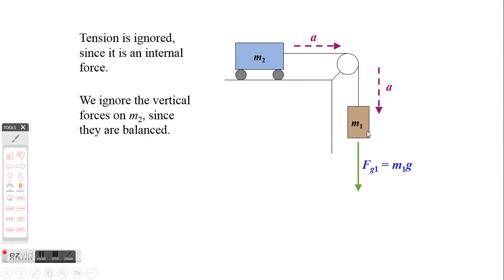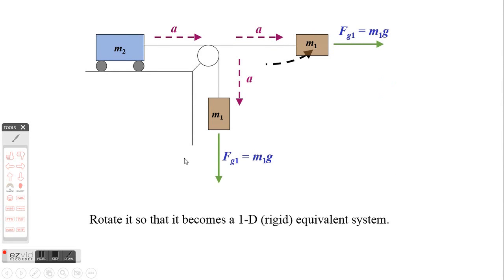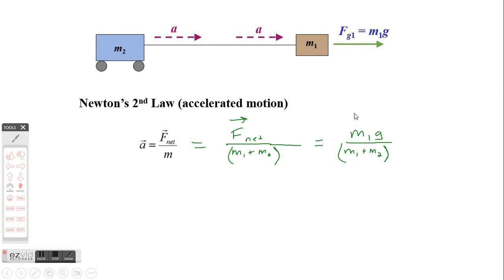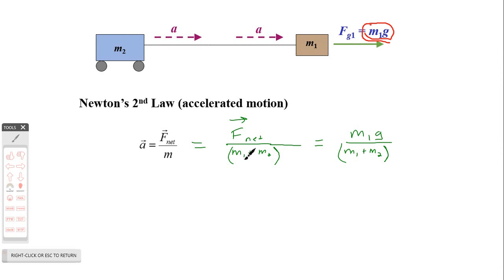We talk about Fg1 — the force of gravity acting on mass 1 — which is mass 1 times the gravitational field strength. We can rotate this so it looks like a 1D rigid equivalent system. Everything is accelerating to the right, and the net force acting on it is going to be m1·g. The mass it acts on is the total mass of the system, m1 plus m2. So we can find the acceleration of the whole system as the net force divided by the sum of the masses.